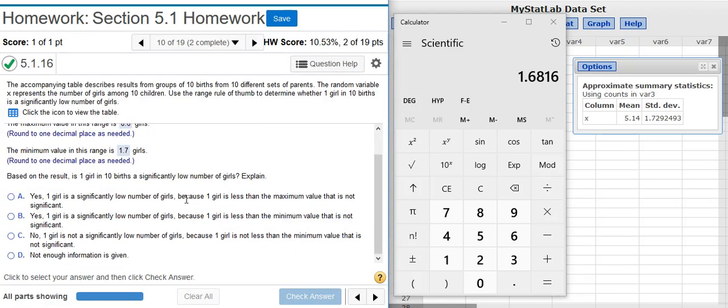Now the last part asks, based on the result, is one girl in 10 births a significantly low number of girls? Explain. Well, if it's going to be significantly low, that means it's outside the range of usual values on the low side.